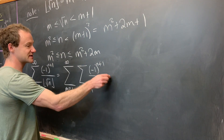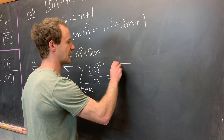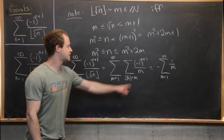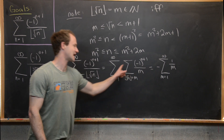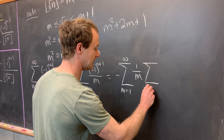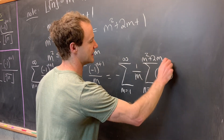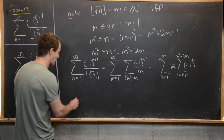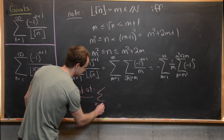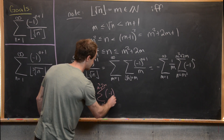I can take a minus sign out of the whole thing, and rewrite this as the sum m equals 1 to infinity of 1 over m. Since the inner sum is indexed by n, I can pull m out as a constant. The inner sum then becomes the sum n equals m squared up to m squared plus 2m of minus 1 to the n.